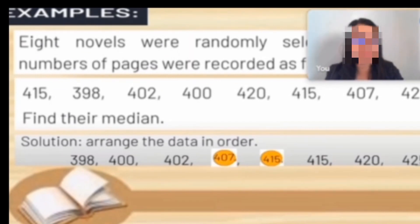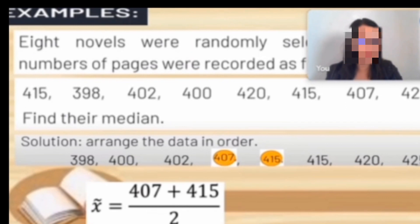We determined already our 4th and 5th location. We need to add the two numbers and divide it by 2. So the answer is 411. Our median of our second example is 411. Is it clear, class?